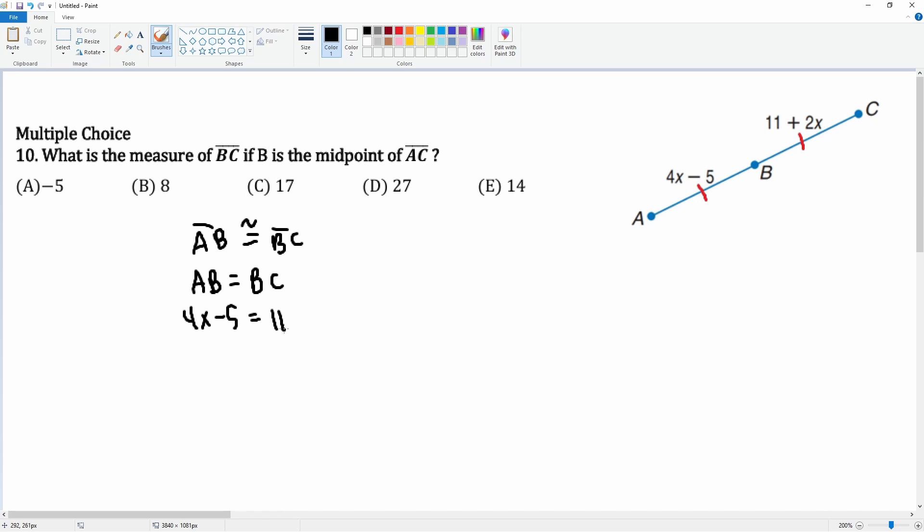4x minus 5 is equal to 11 plus 2x. Let's do some solving. We're going to minus 2x to both sides and add 5 to both sides. We have 2x equals 16. Divided by 2, x equals 8.